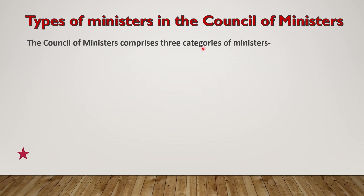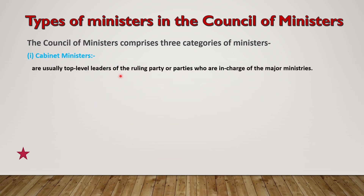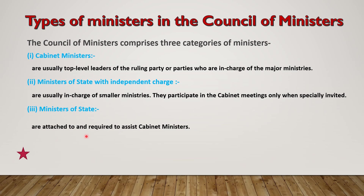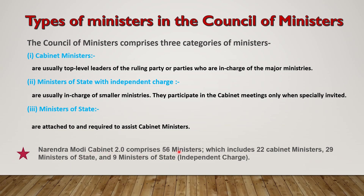The types of ministers in the council of ministers is also an important question. The council of ministers comprises three categories. First, cabinet ministers — usually top-level leaders of the ruling party or parties who are in charge of the major ministries. Second, ministers of state with independent charge — usually in charge of smaller ministries; they participate in cabinet meetings only when specially invited. Third, ministers of state — attached to and required to assist cabinet ministers. Narendra Modi's cabinet comprises 56 ministers, which includes 22 cabinet ministers, 29 ministers of state, and 9 ministers of state with independent charge.